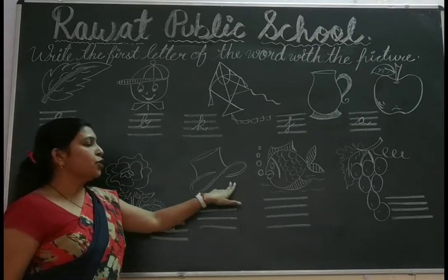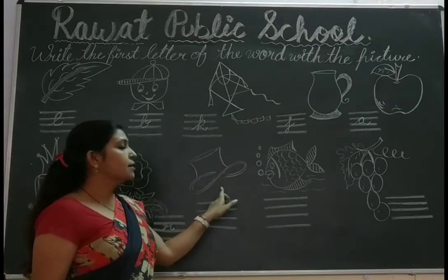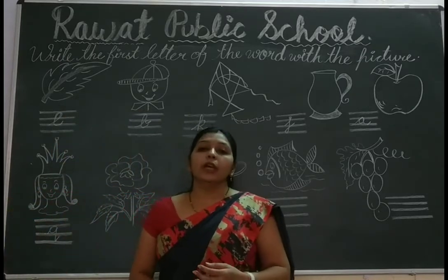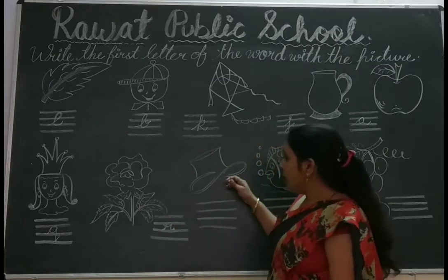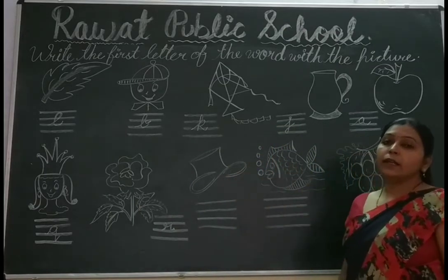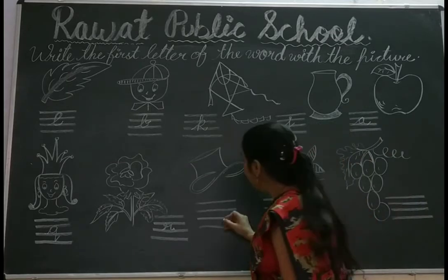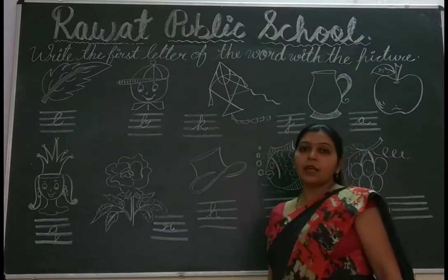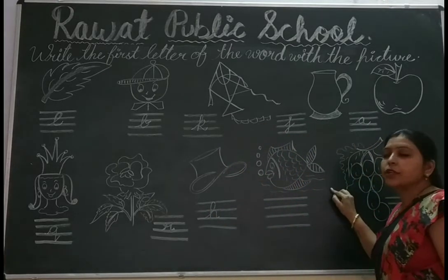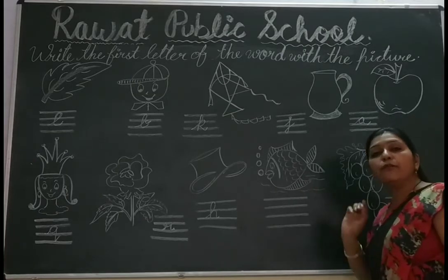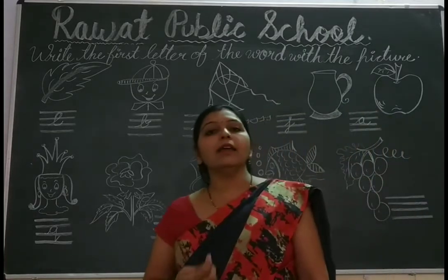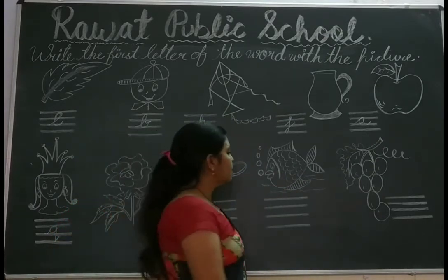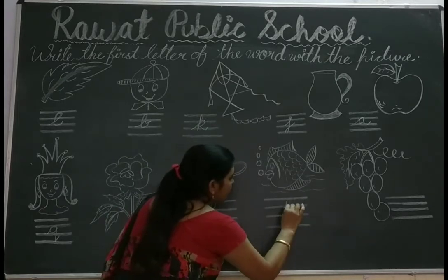Next, it is a picture of Hat. This is a picture of Hat. The spelling of Hat is H-A-T. So the first letter of Hat is H. Write it here: H. Next, it is a picture of Fish. Fish. The spelling of Fish is F-I-S-H. The first letter of Fish is F. So write it here: F.